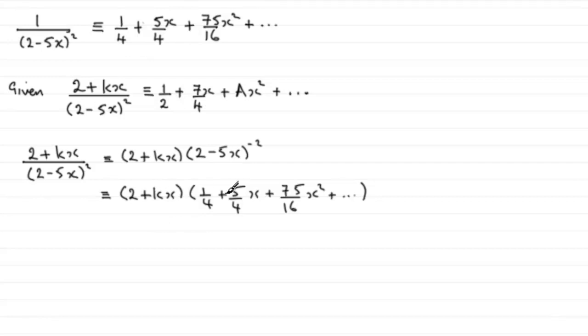Now, there's no need to fully expand this, because what we can do is we know that this is meant to be identical to this expression up here. Let's just put that underneath. This is identical, apparently, then to a half plus 7 quarters x plus ax squared, and so on.